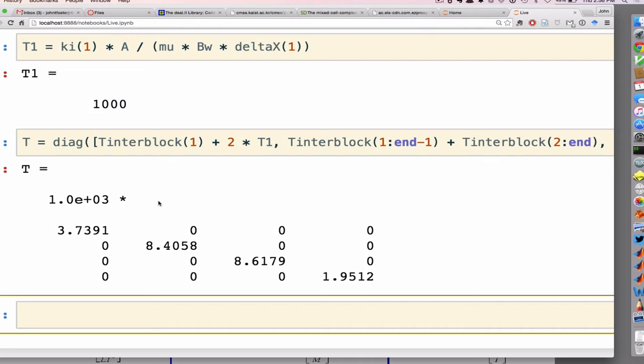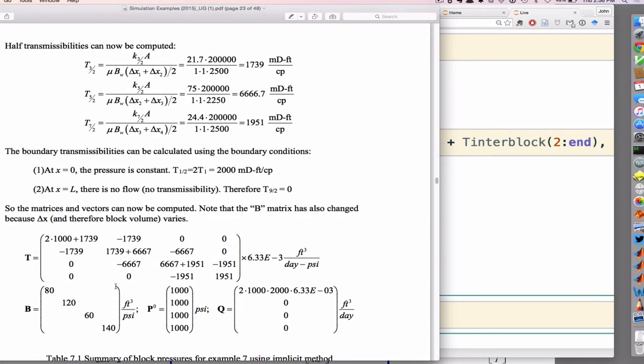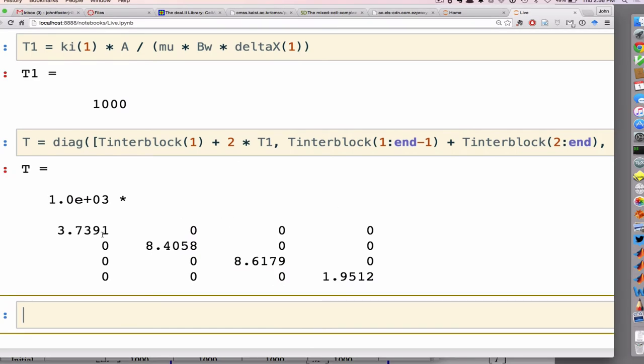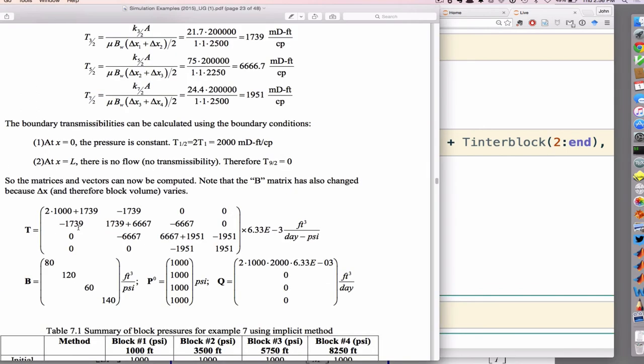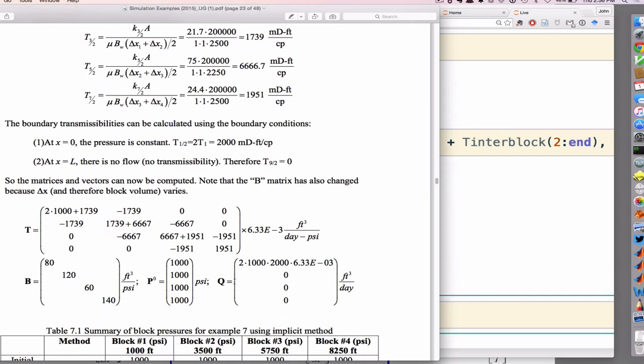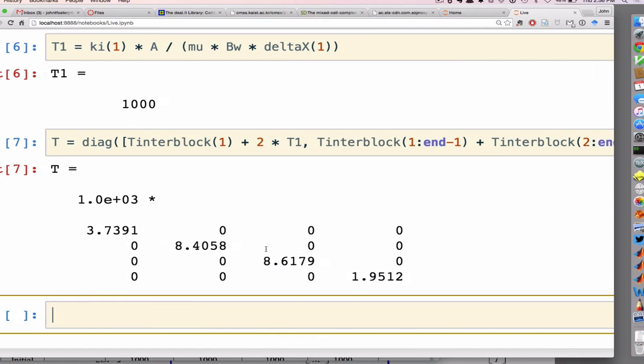So the first term on the diagonal should be 3,739. So that's right. Then 6,667 plus 1739 is 8,406. So that looks right. The last term is 19,512. So yeah, okay, I think we're good enough, close enough.